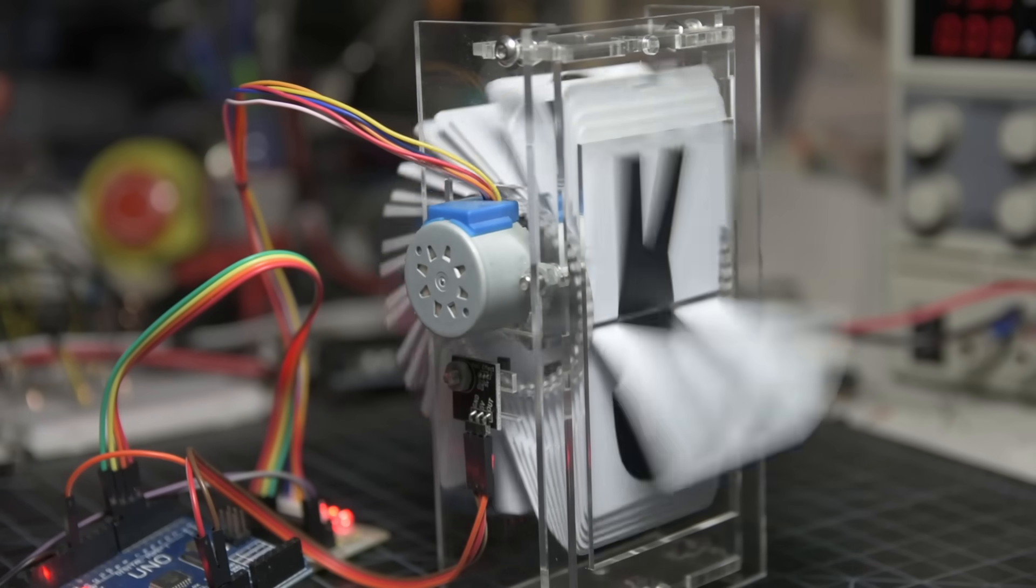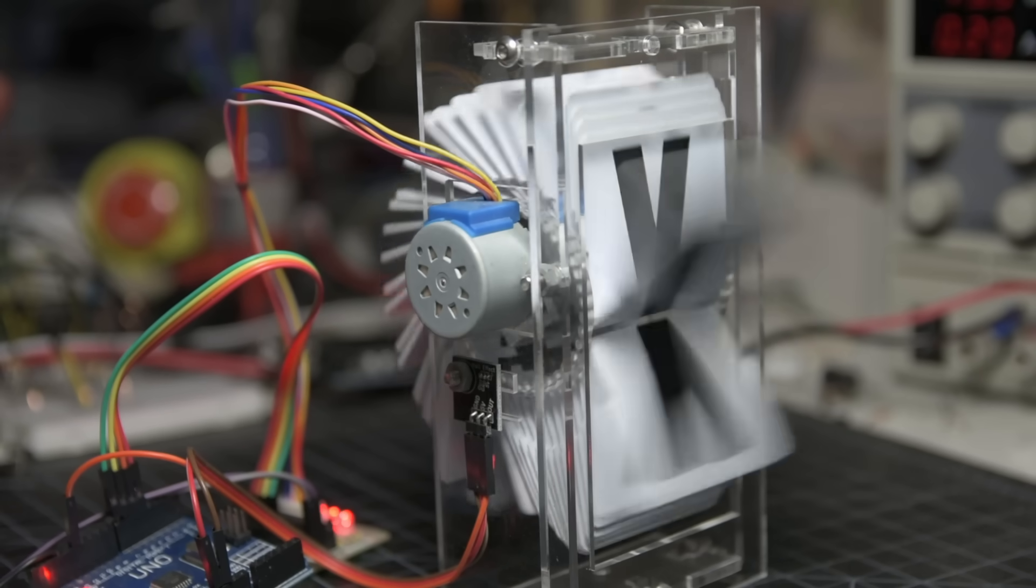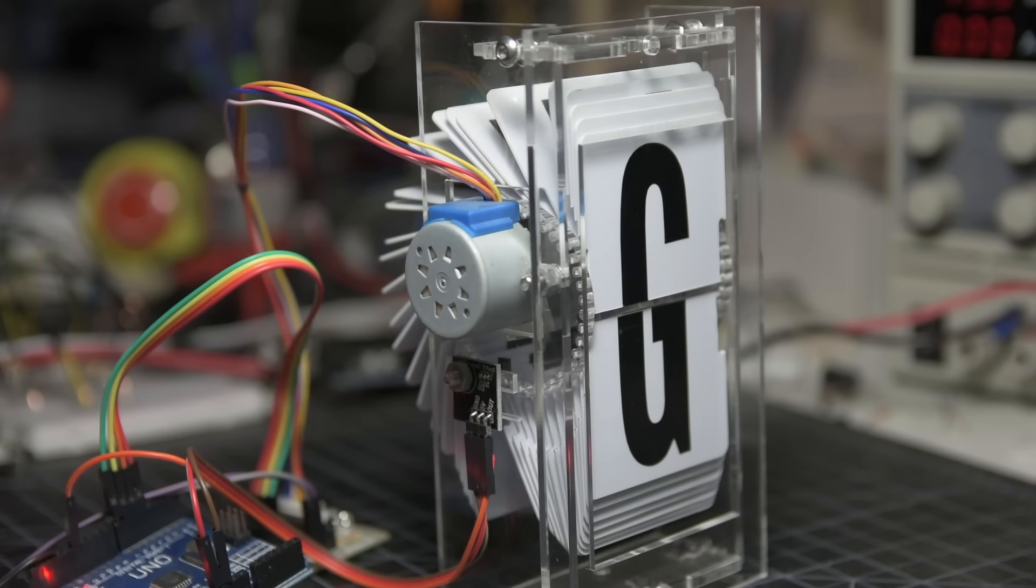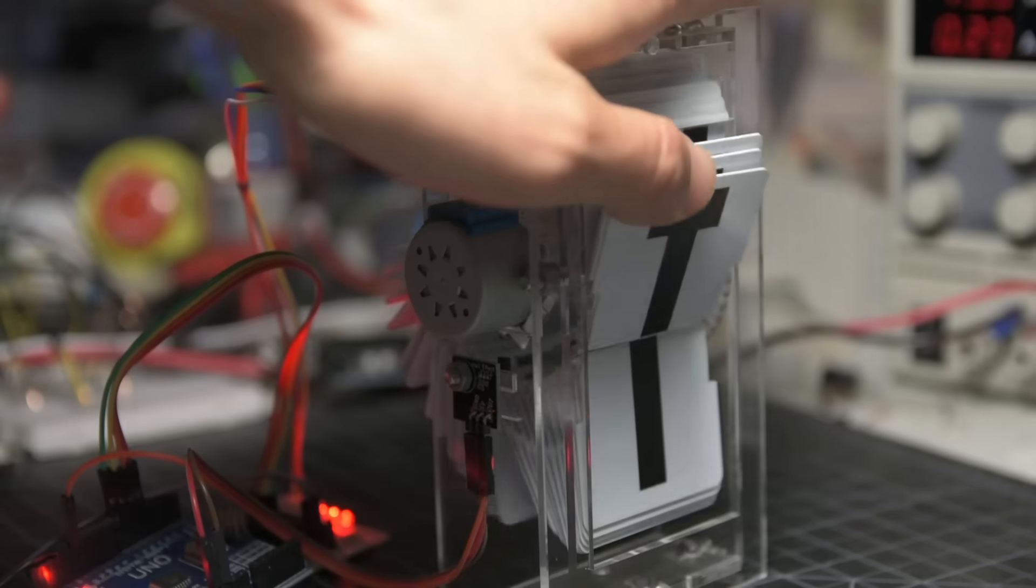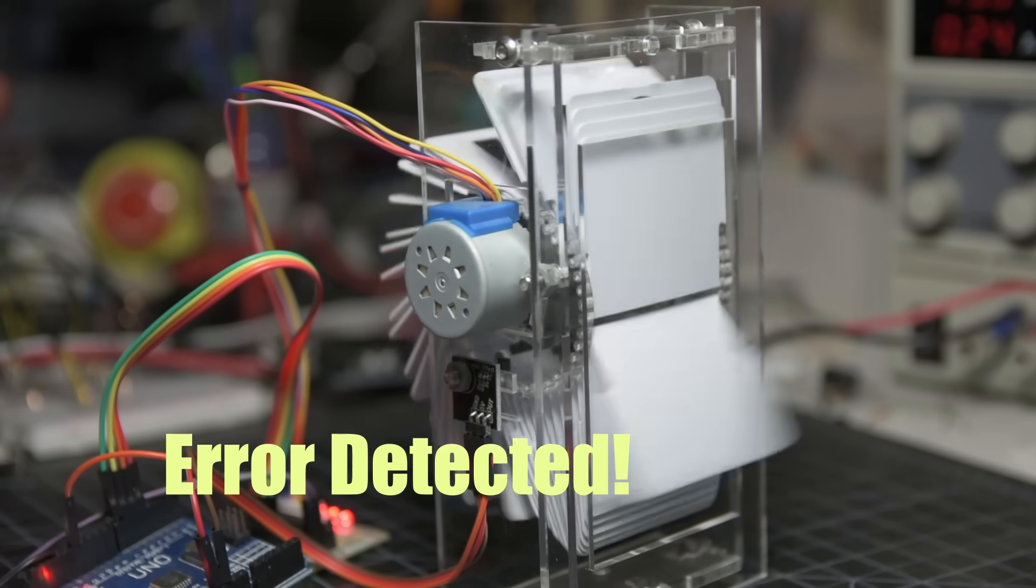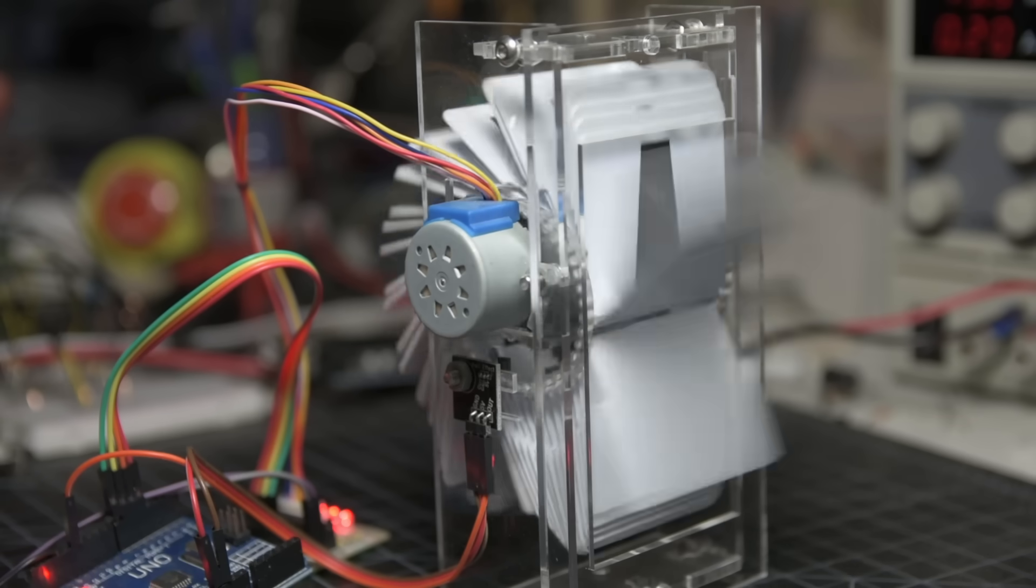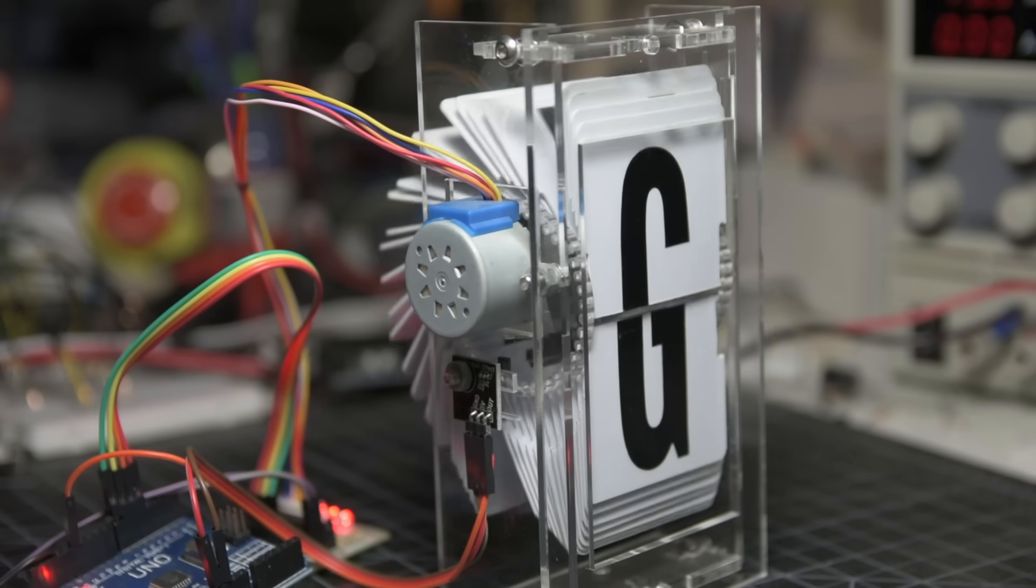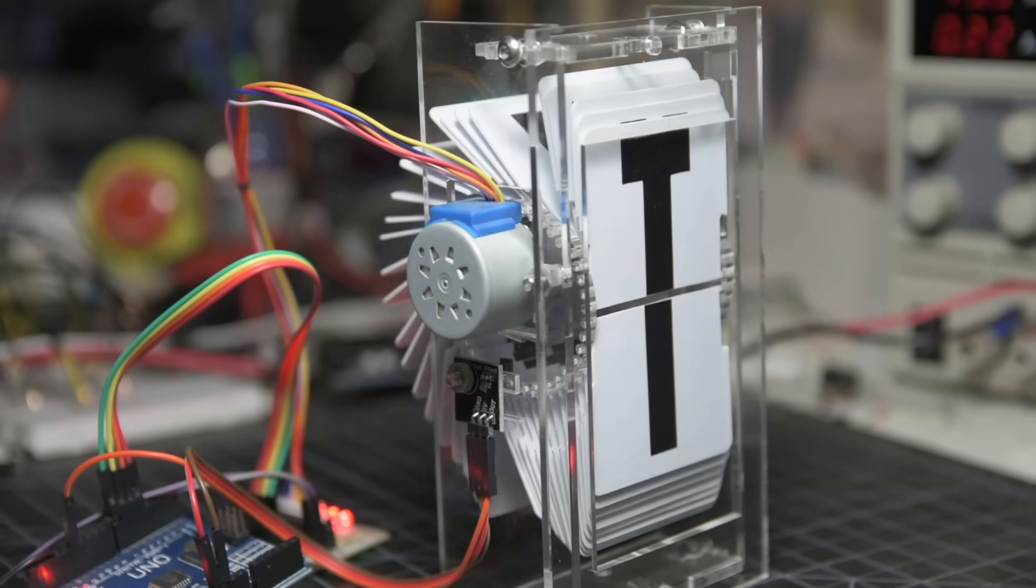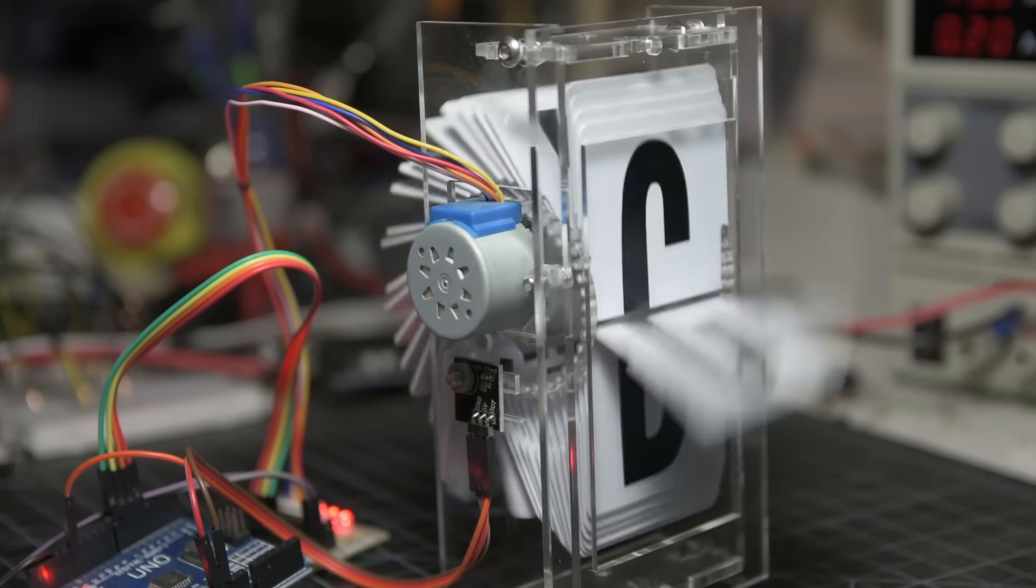The Hall effect sensor also allows the Arduino to detect errors. Since the Arduino is tracking how far the spool is rotated, it knows exactly when to expect the magnet passing in front of the Hall effect sensor again. If it doesn't detect the magnet when it expects it, it means something must have prevented the spool from rotating as far as it was supposed to. If this happens, the Arduino returns to that initial homing sequence where it searches for the magnet to recalibrate.